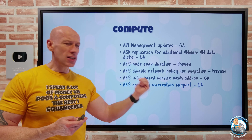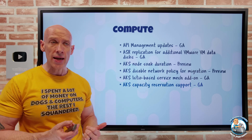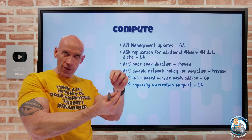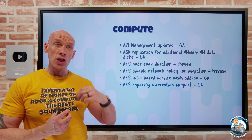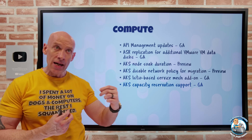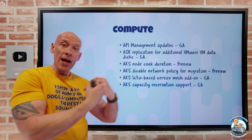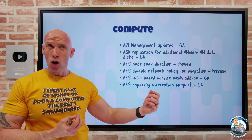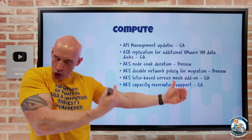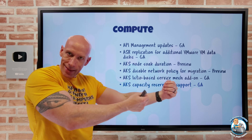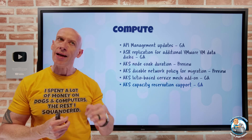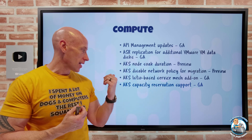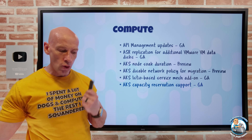Capacity reservations can now be used with AKS in GA. A capacity reservation lets you say: in this region, in this zone, for this specific SKU, I'm going to reserve capacity, getting an SLA with a financially backed guarantee that I'll be able to create resources into that capacity reservation group. It's like booking a block of hotel rooms — you pay for that whole time. Now my AKS node pools can provision into a capacity reservation group, so I can consume that reserved capacity through AKS.